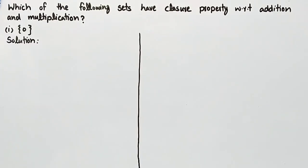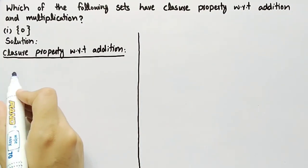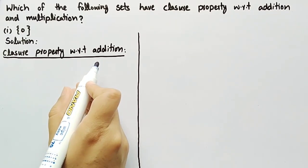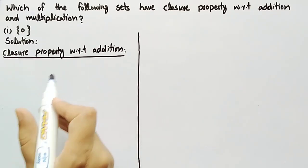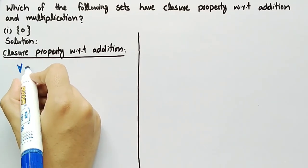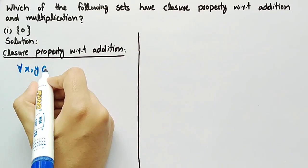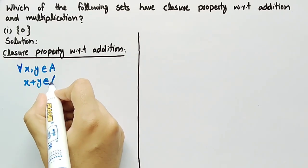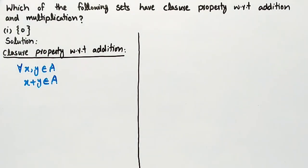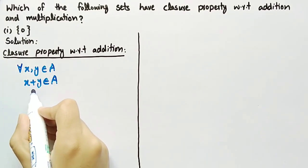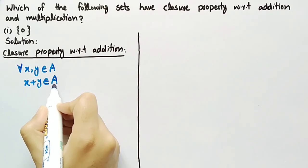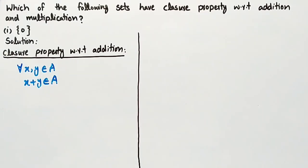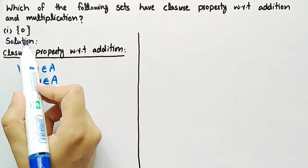Now coming towards the solution of the first question, firstly we will check closure property with respect to addition. The definition of closure property with respect to addition is: for all x, y belonging to a set A, x plus y must also belong to set A. It means that the addition of any two elements of a set must also belong to that set, then we can say that the set is closed under addition.